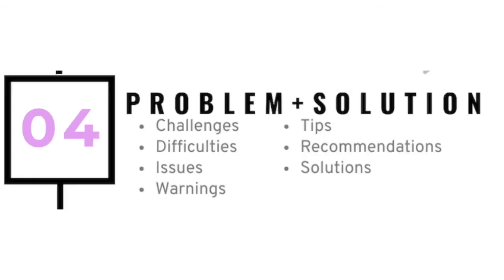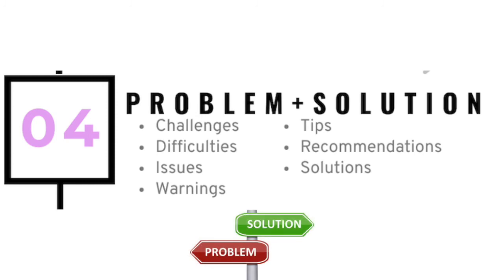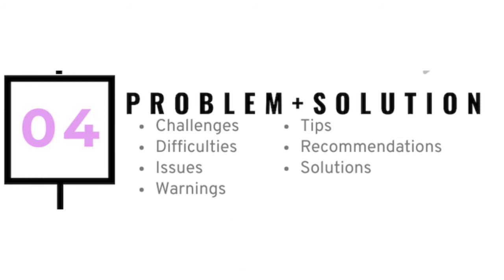The problem and solution text structure presents an issue and explains how the issue is solved. This type of writing can sometimes include one or more possible solutions to the problem being presented.